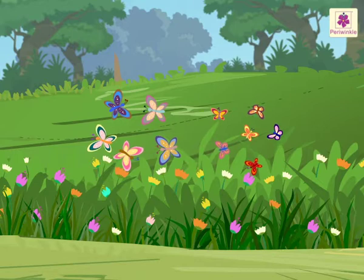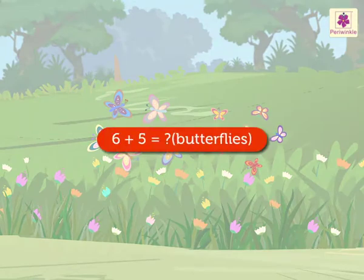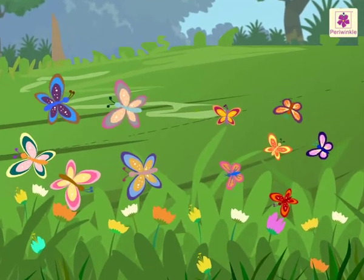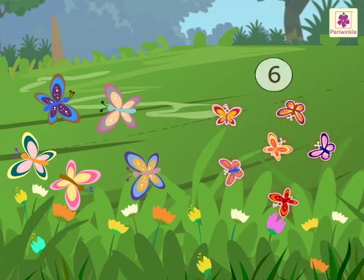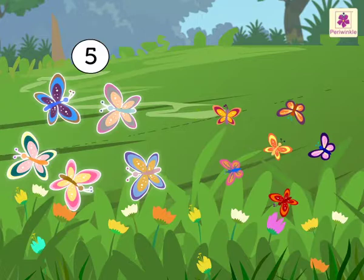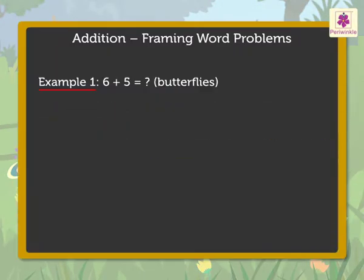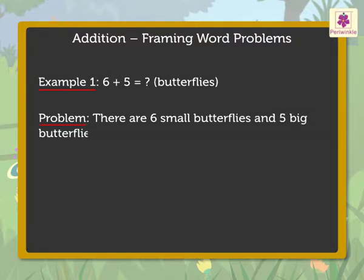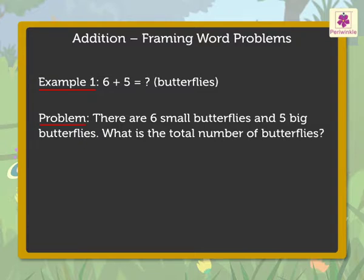Let's use butterflies and begin with framing a word problem for 6 plus 5. There are 6 small and 5 big butterflies. So we can frame a word problem as: there are 6 small butterflies and 5 big butterflies. What is the total number of butterflies? Here we have used the word total to represent addition.